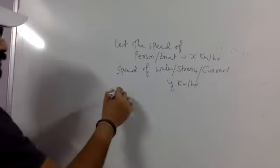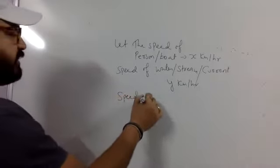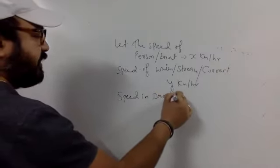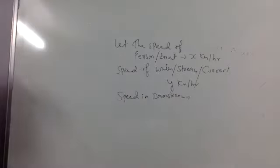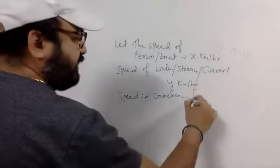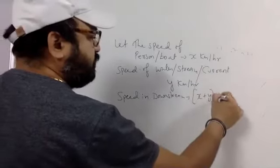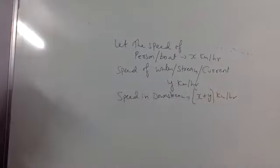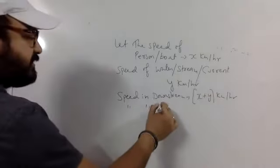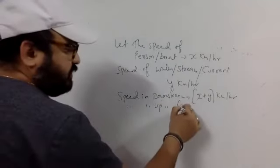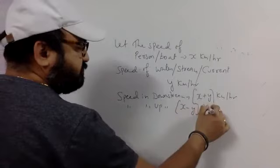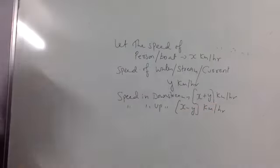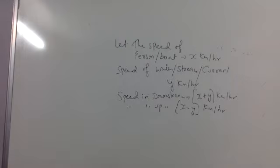Now concept number 2. Whenever I am going to calculate the speed in downstream, so I will add both the speeds. Agreed? So definitely then speed in upstream, it will be here x minus y. Never write y minus x in this condition because we have taken x as speed of person or boat. Right? That's all.